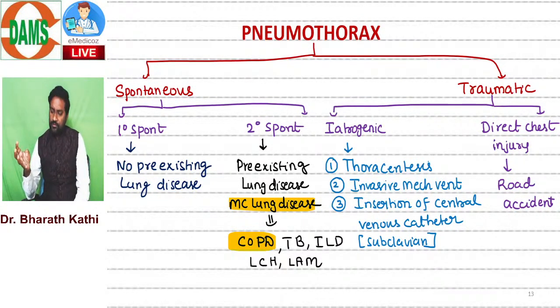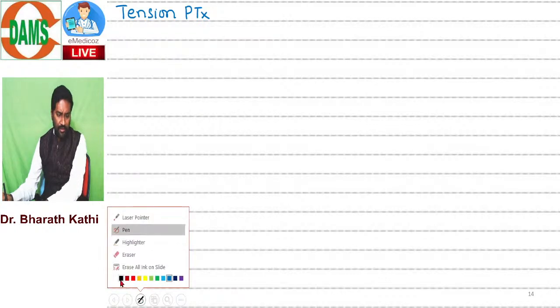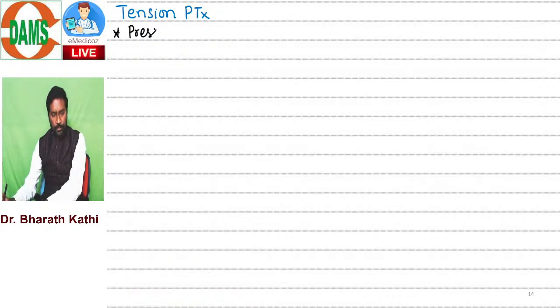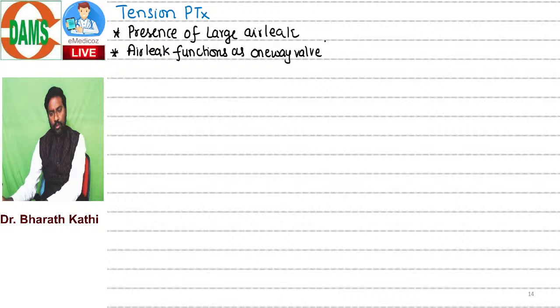Pathological forms of pneumothorax include simple or closed type, open type, and tension pneumothorax. For your exam and in the emergency department, the most important type is tension pneumothorax - a life-threatening medical emergency. For development of tension pneumothorax, there will be a large air leak, and this air leak functions as a one-way valve or ball valve. During inspiration, air comes into the pleural space; during expiration, nothing goes out.